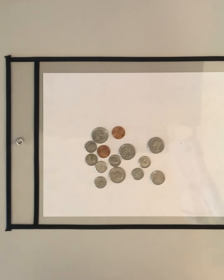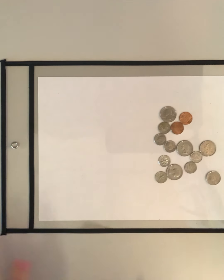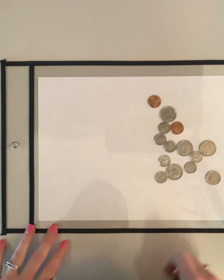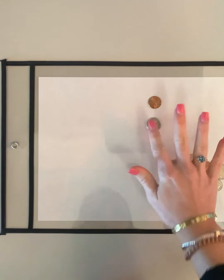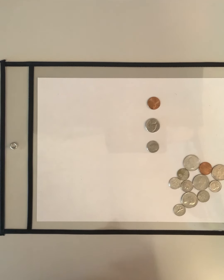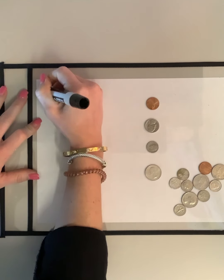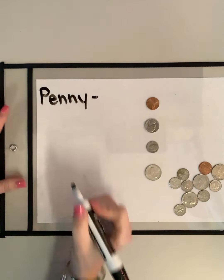I looked in my purse yesterday and got all the coins out that I could find. I was thinking I would love to know how many different coins I have. I know I have four different kinds in my purse — pennies, worth one cent; at least one nickel, worth five cents; some dimes, worth ten cents; and some quarters, worth 25 cents. I was wondering how many of each of these coins do I have?